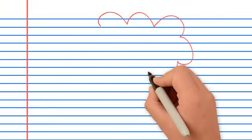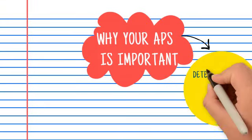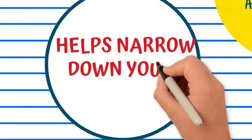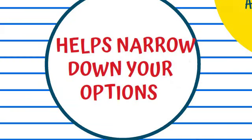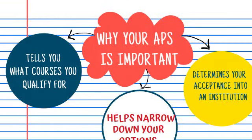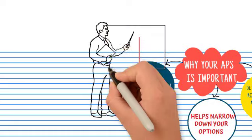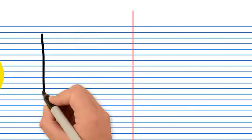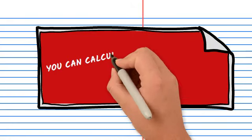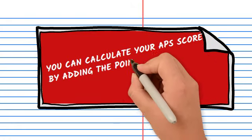So first things first, why is your APS so important? Well, it determines your acceptance into an institution, it helps narrow down your options, and it tells you what courses you qualify for. This is incredibly helpful for matriculants who are unsure about what to study, and first years who aren't sure whether what they studied is the correct thing for them.